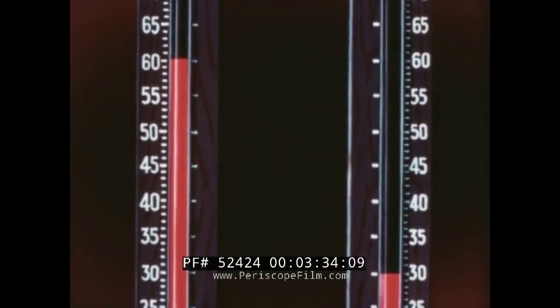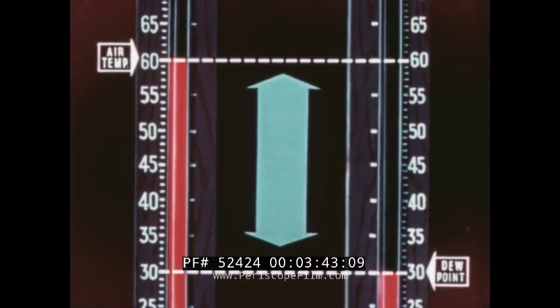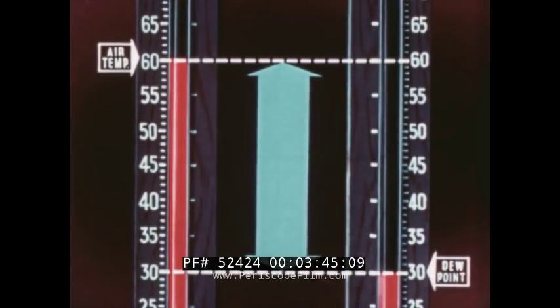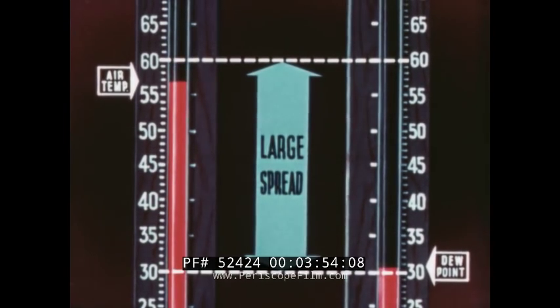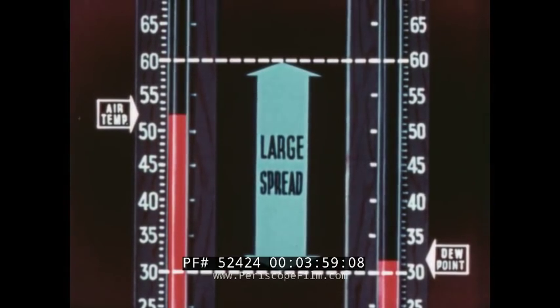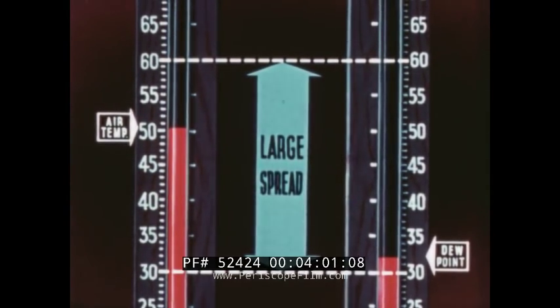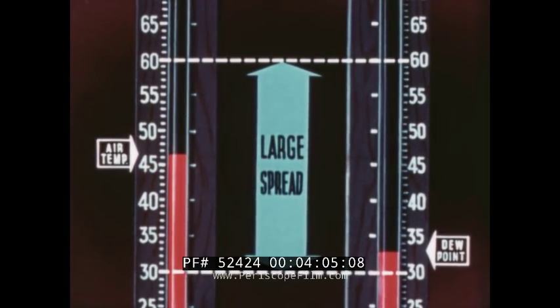In air free of fog, there is a difference between the temperature of the air and the dew point. The amount of spread between these two is an important factor in predicting fog formation. With a large spread, the temperature of the air must decrease and the dew point must increase a great deal before they become equal. Consequently, the formation of fog is unlikely.